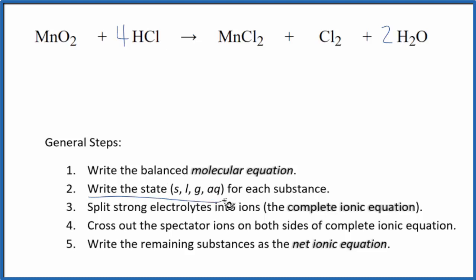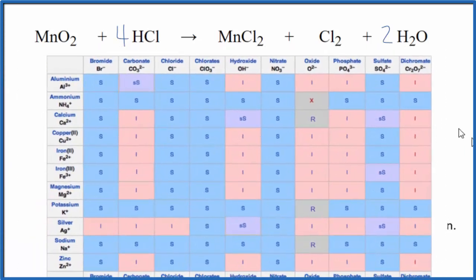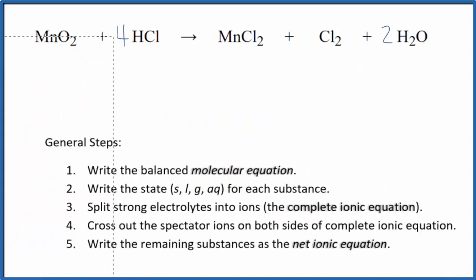Next, we write the states for each substance. For the manganese oxide, if we look at a solubility chart here, you'll notice that the oxides, almost all of those are insoluble when you put them in water. Manganese oxide, while it's not on this chart, is also insoluble in water. Because of that, we're going to put an S. It's going to be a solid. It won't dissolve.